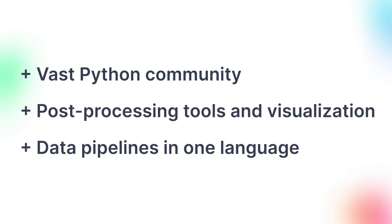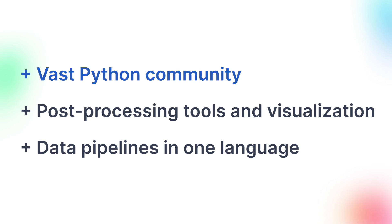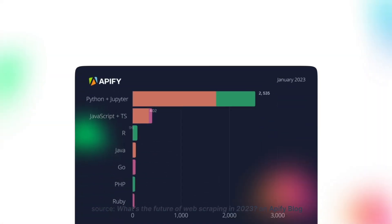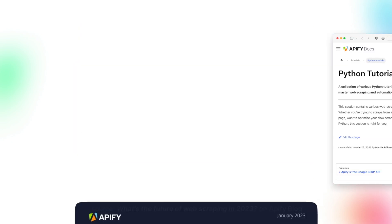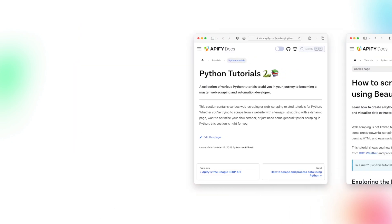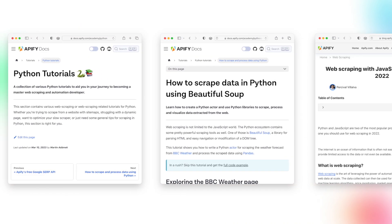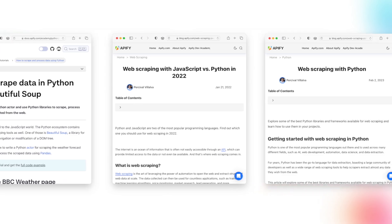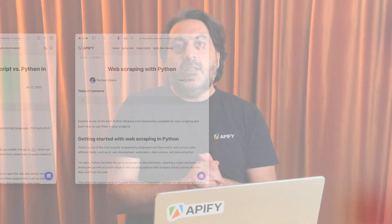The first obvious pro to Python is the sheer size of its community. Python dwarfs all other languages when it comes to popularity for web scraping projects. That means you'll find loads of tutorials, documentation, and help from other developers in the Python community.